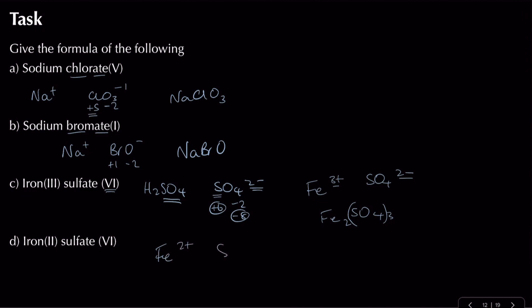For iron(II) sulfate: iron is two plus and SO4²⁻, drop and swap gives FeSO4. That's how we find the formula from given systematic names.